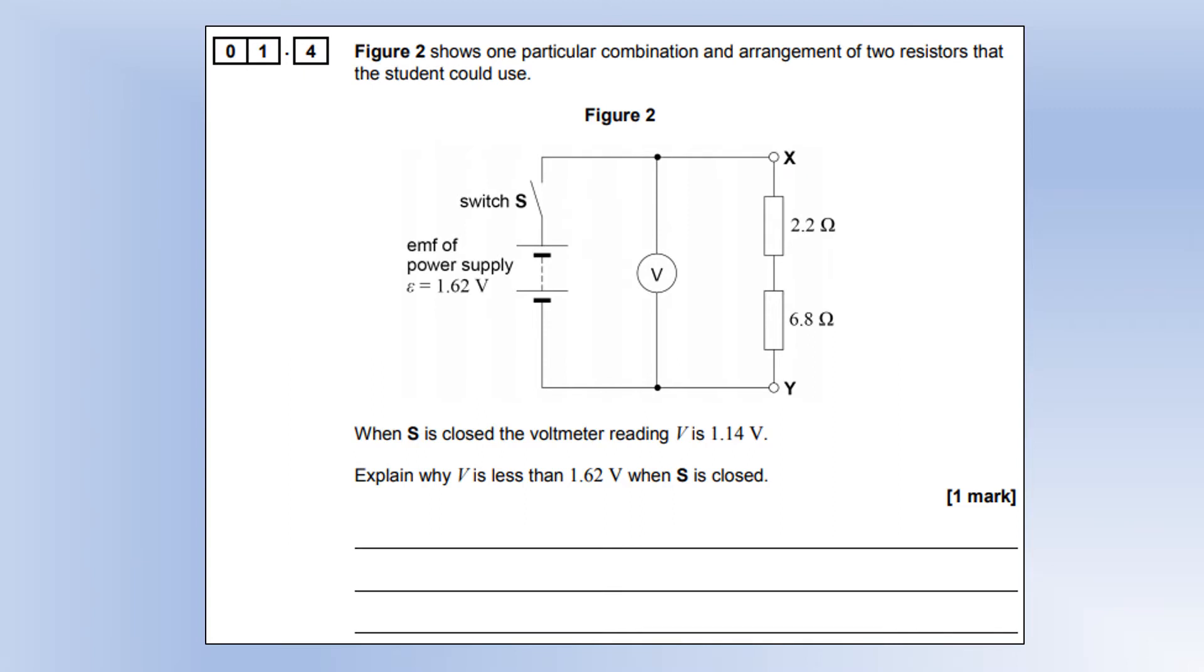We've got a diagram showing one particular combination. When the switch is closed, the voltmeter reading is 1.14 volts. Explain why V is less than 1.62 when the switch is closed. Now the current is not zero, so the potential lost across the power supply's internal resistance will be not zero either. So the terminal voltage is going to be less than the EMF because you've already lost some potential across the internal resistance.